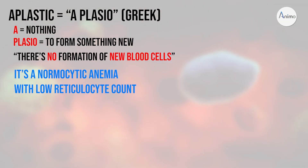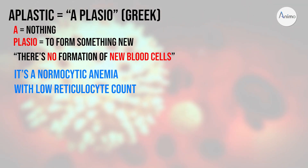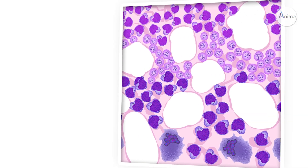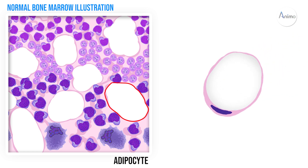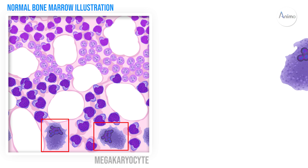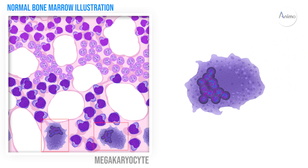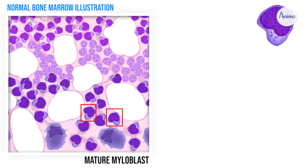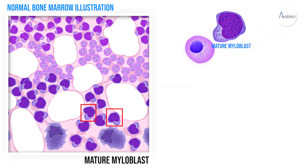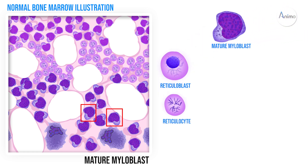It is actually normocytic anemia with low reticulocyte count. This is the histological illustration of normal bone marrow. Here you see this large white substance called adipocytes, storing a large amount of fat, and these large cells are called megakaryocytes, and these dark purplish cells are called mature myeloblasts.